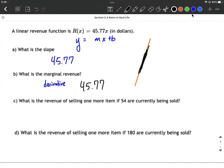What's the revenue of selling one more item if 54 are currently being sold? The marginal revenue always means the same thing as the revenue for selling one more item. This is consistent, it doesn't change. It's always the exact same. In this case, if you're selling 54 currently, that 55th is also going to be 45.77.